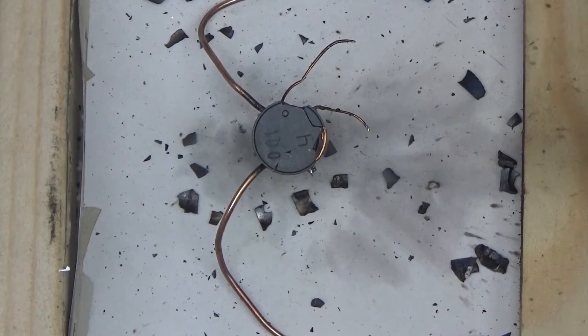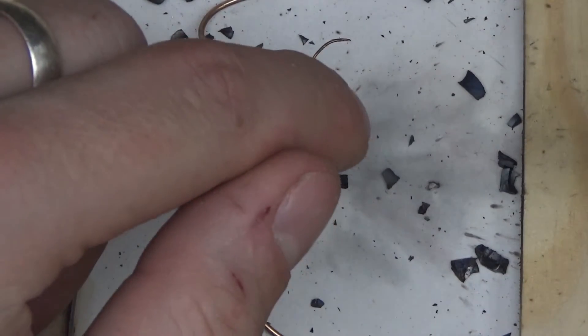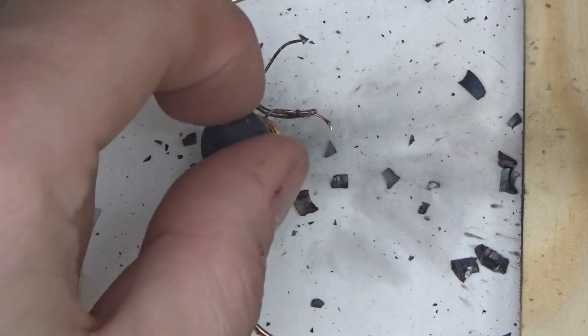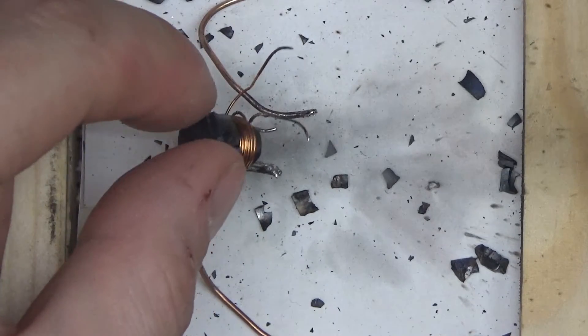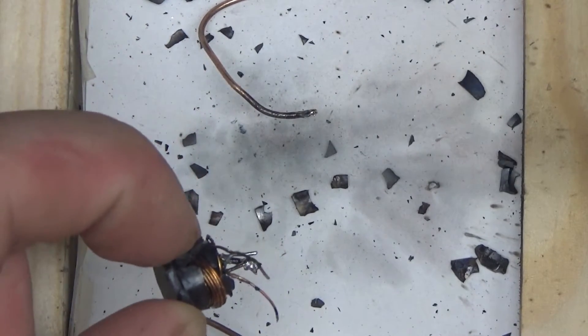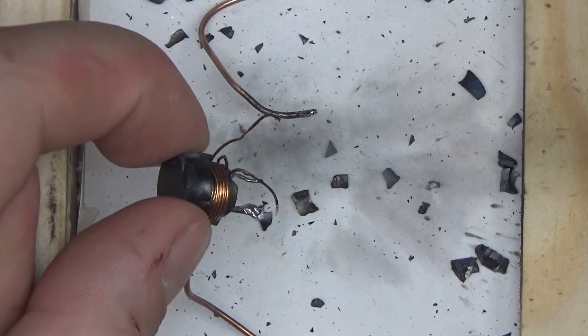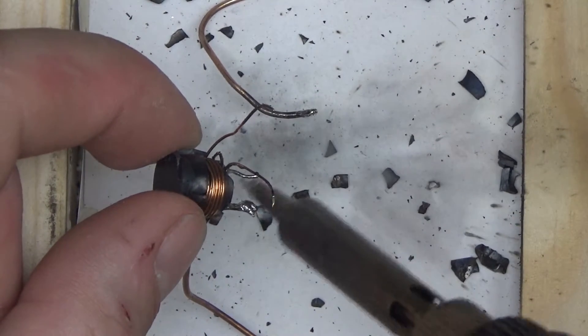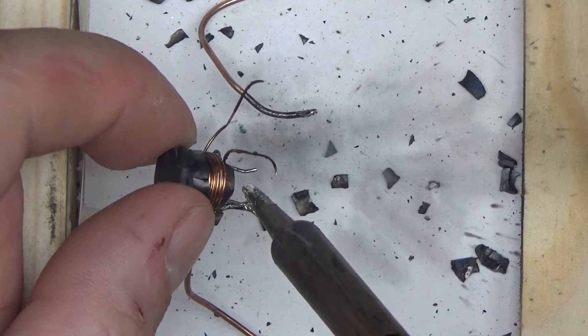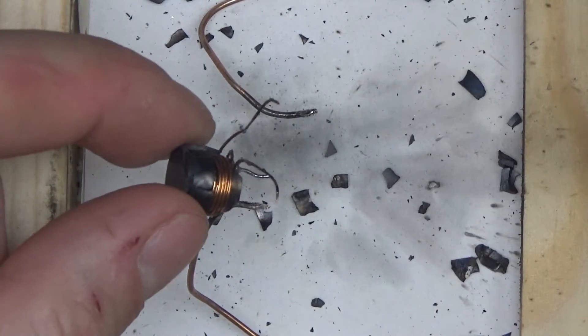So what has happened: when the current went through the coil of the inductor, you can see it unwound itself. There's quite a lot of energy in this—it actually ripped the coil apart.